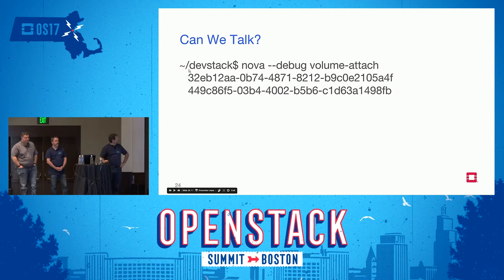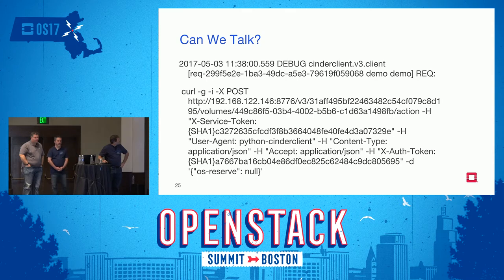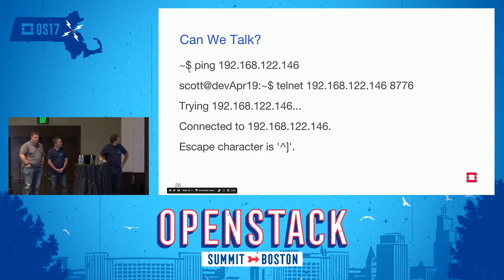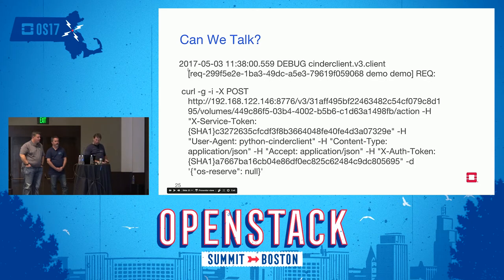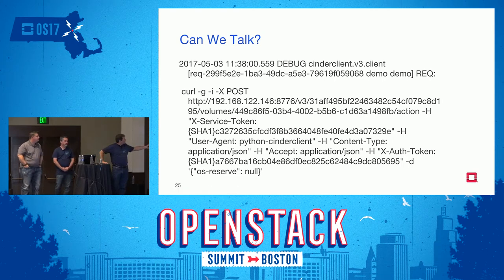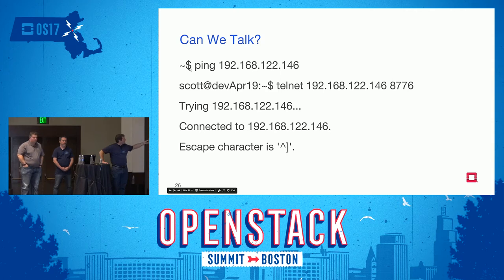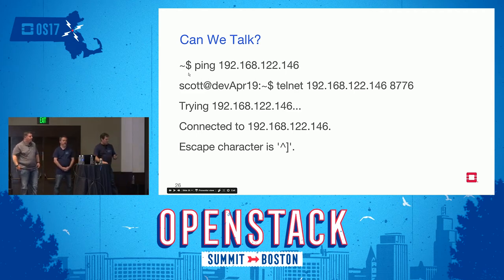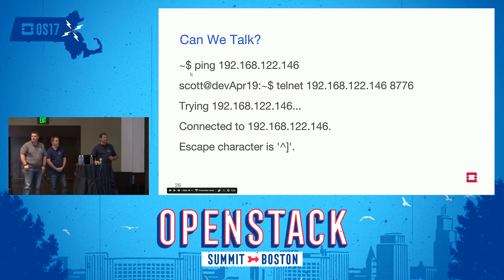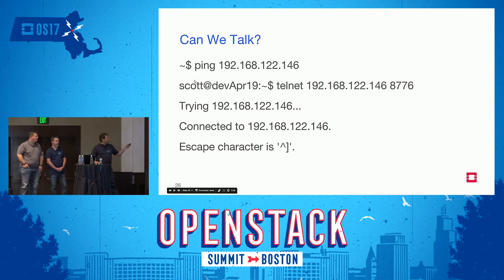With 'nova volume-attach' you can get more information about an exact attachment failure. You'll get the exact REST command; substitute in a token to make it valid. You can also see which IP address Nova is using to talk to Cinder's API server at port 8776, so you can check connectivity between Nova and Cinder — ping it, telnet to that port. In larger deployments with network switches and multiple availability zones, ACL changes can close down ports and cause volume attaches to stop working unexpectedly.